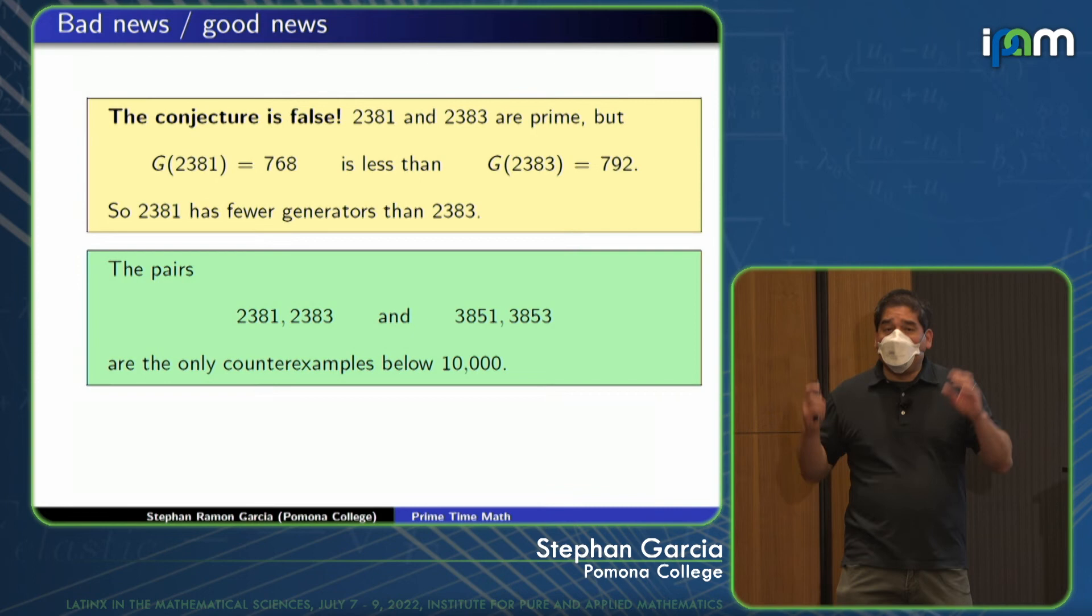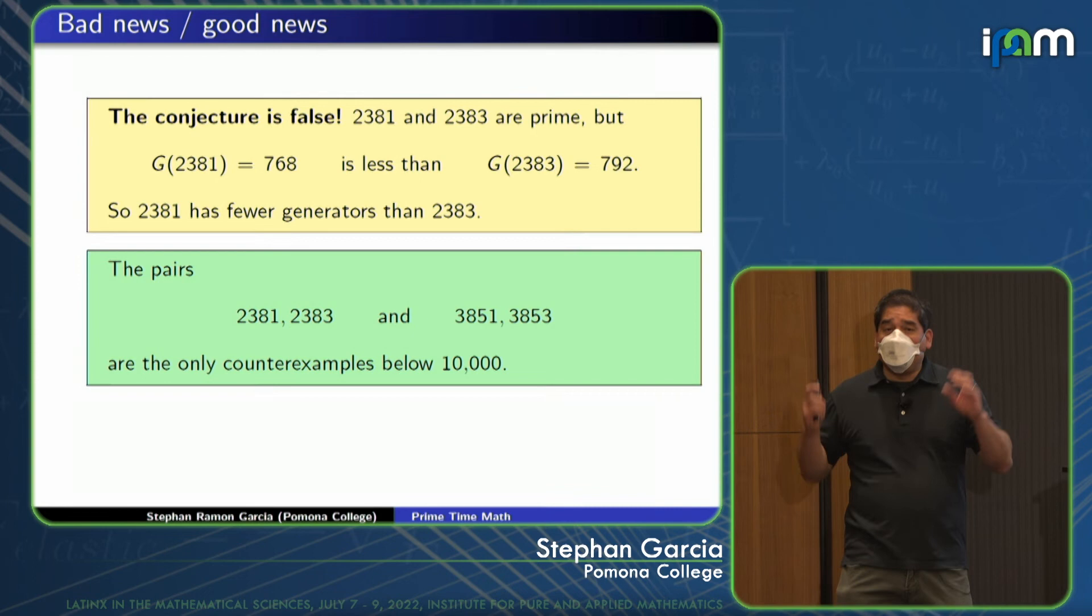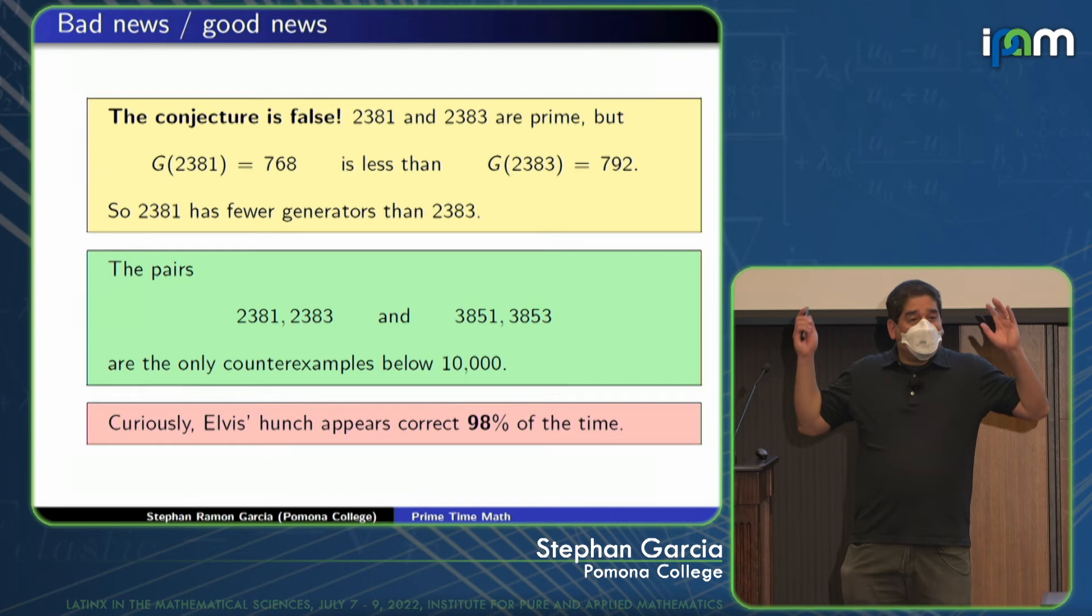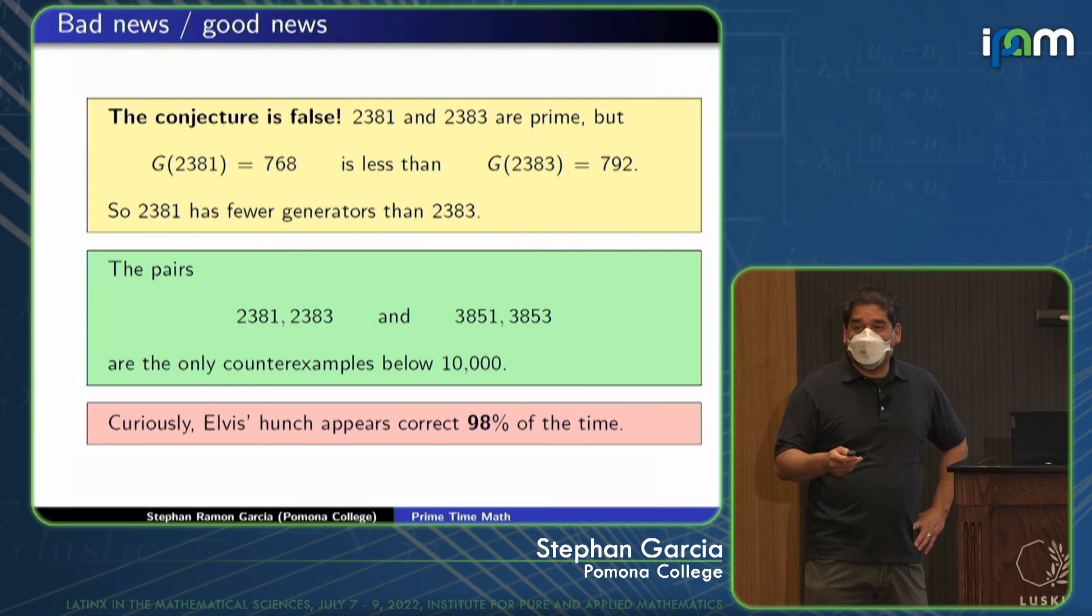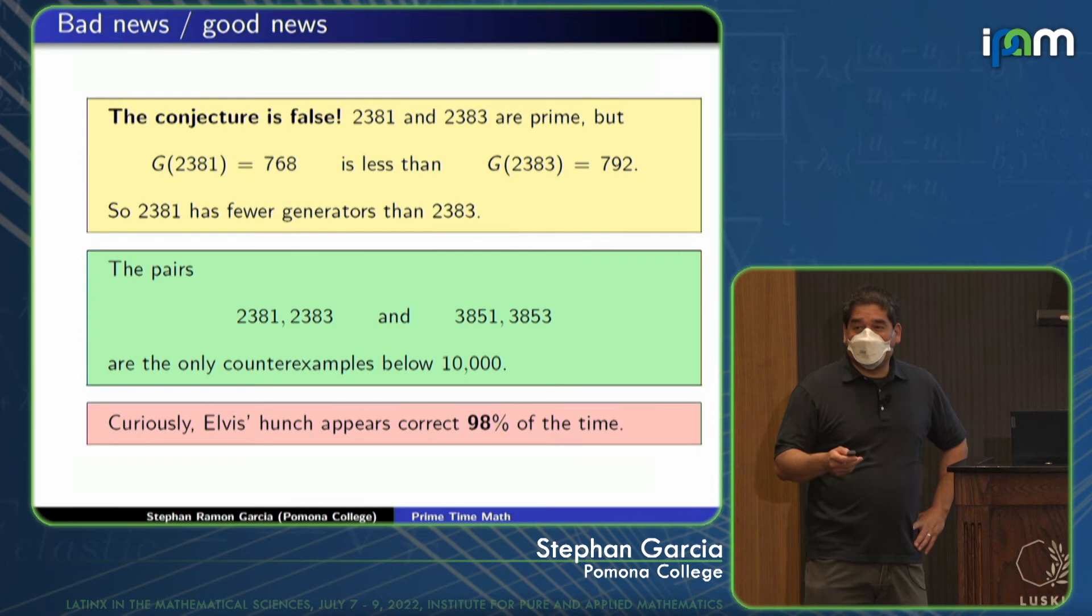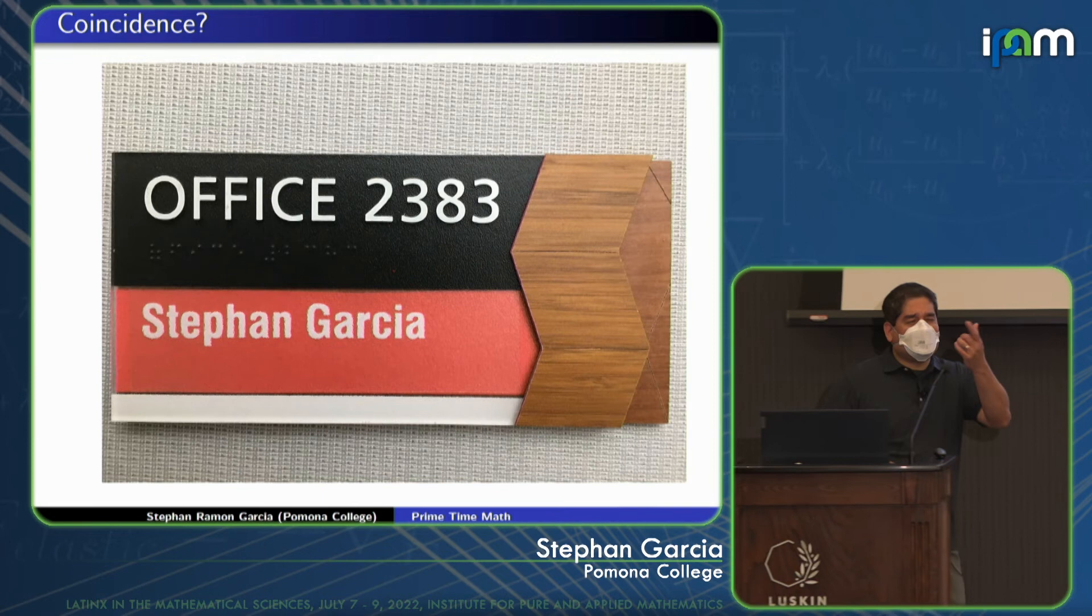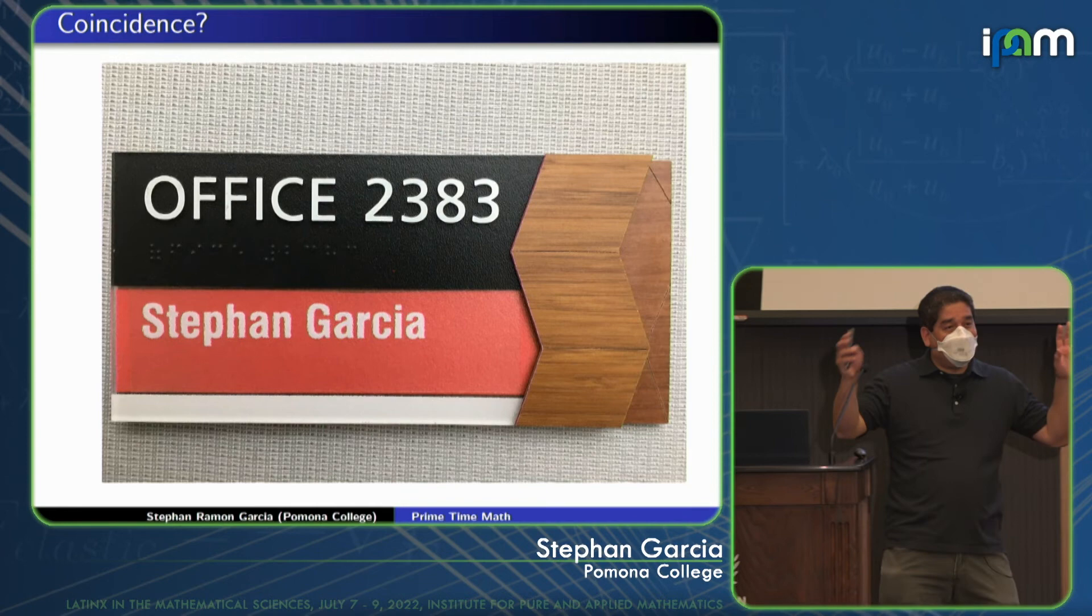Here's a weird thing. My office number happens to be 2383, which is one of the counterexamples there. This was not known to me or not pointed out to me until I gave a talk. And Omidra, who is one of the speakers later today, is the one that pointed out to me in a talk. She said, wait, isn't 2383 your office number? And I said, oh, wow, you're right, it is. So I guess I can compartmentalize stuff. So a remarkable coincidence.